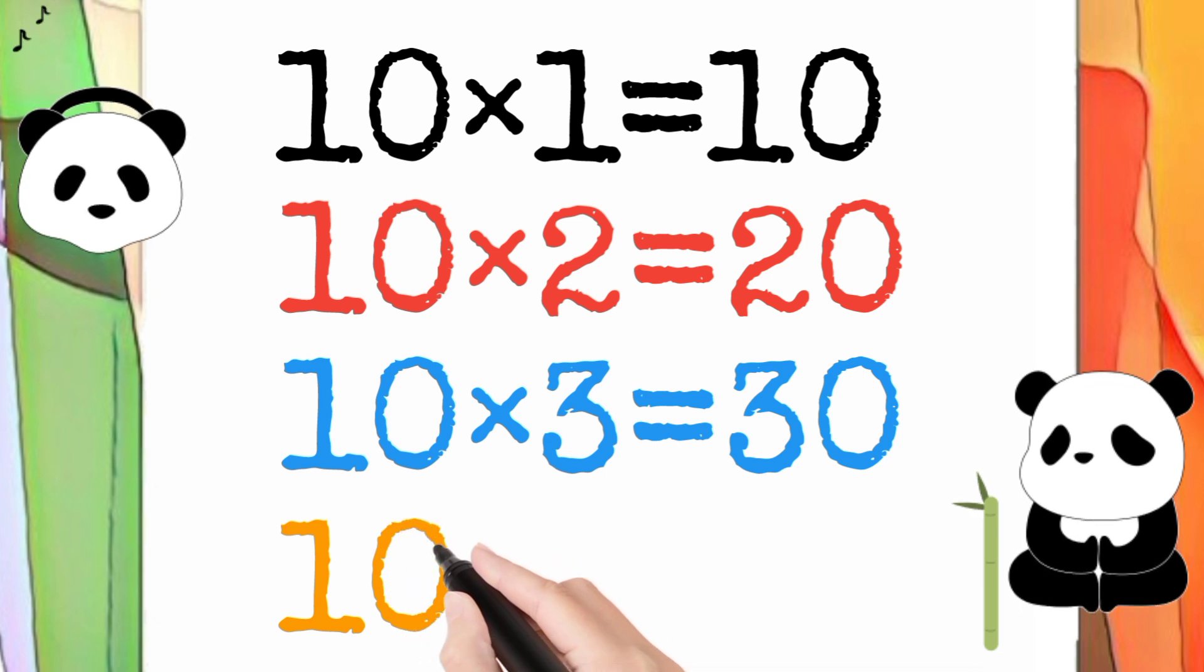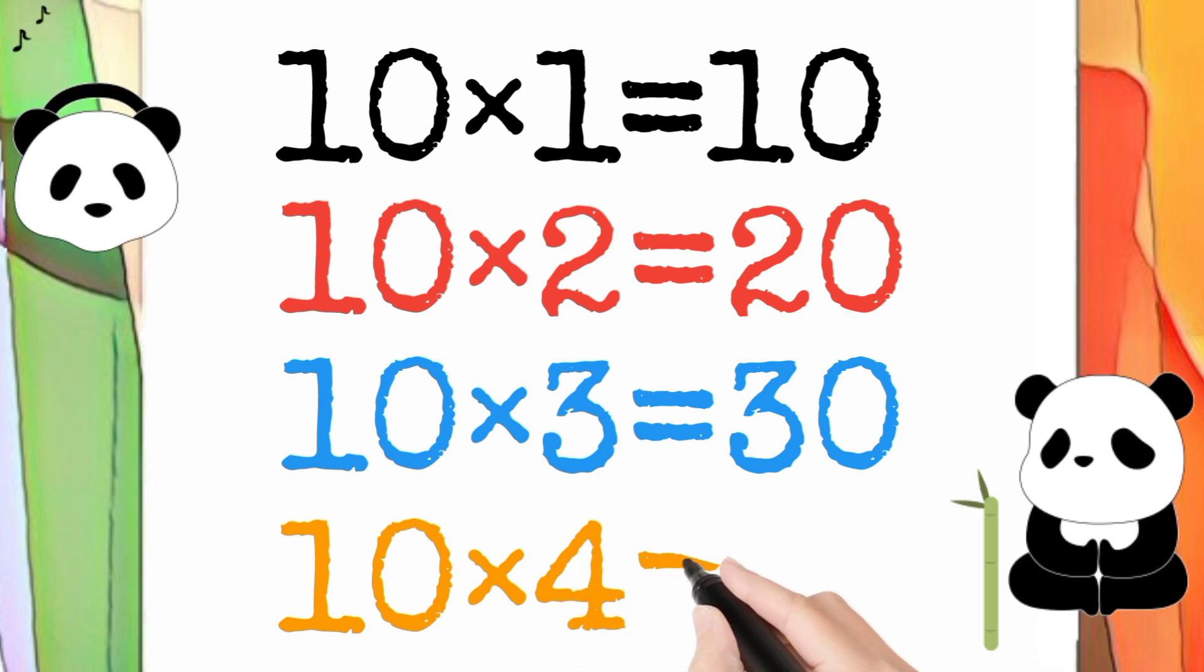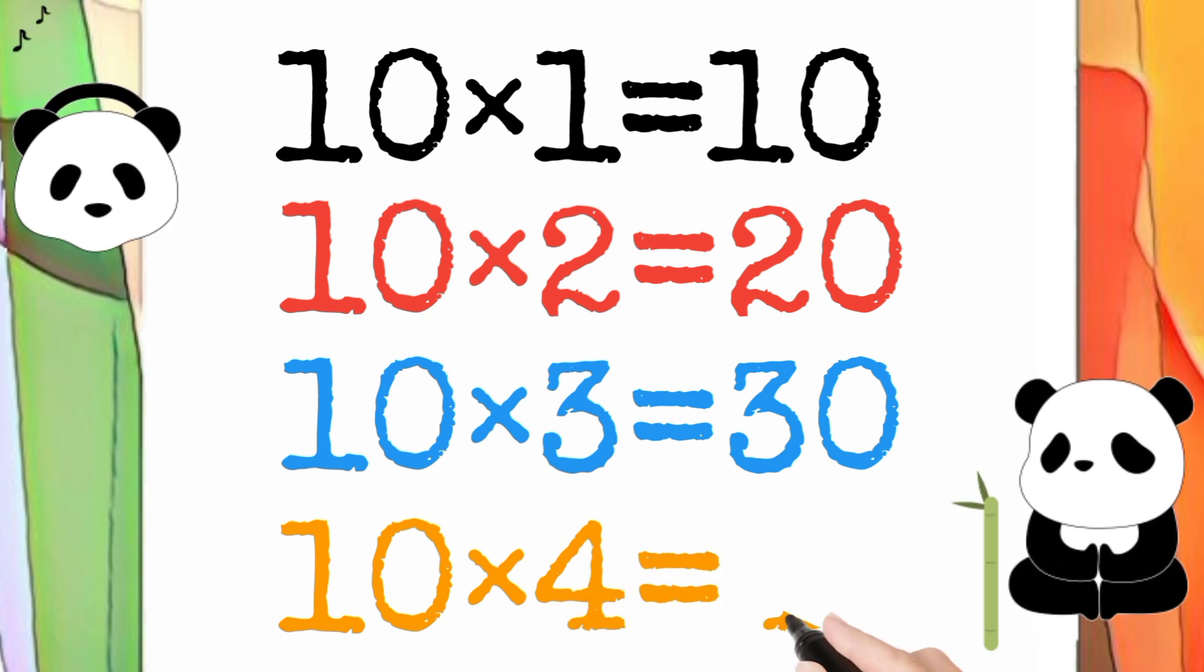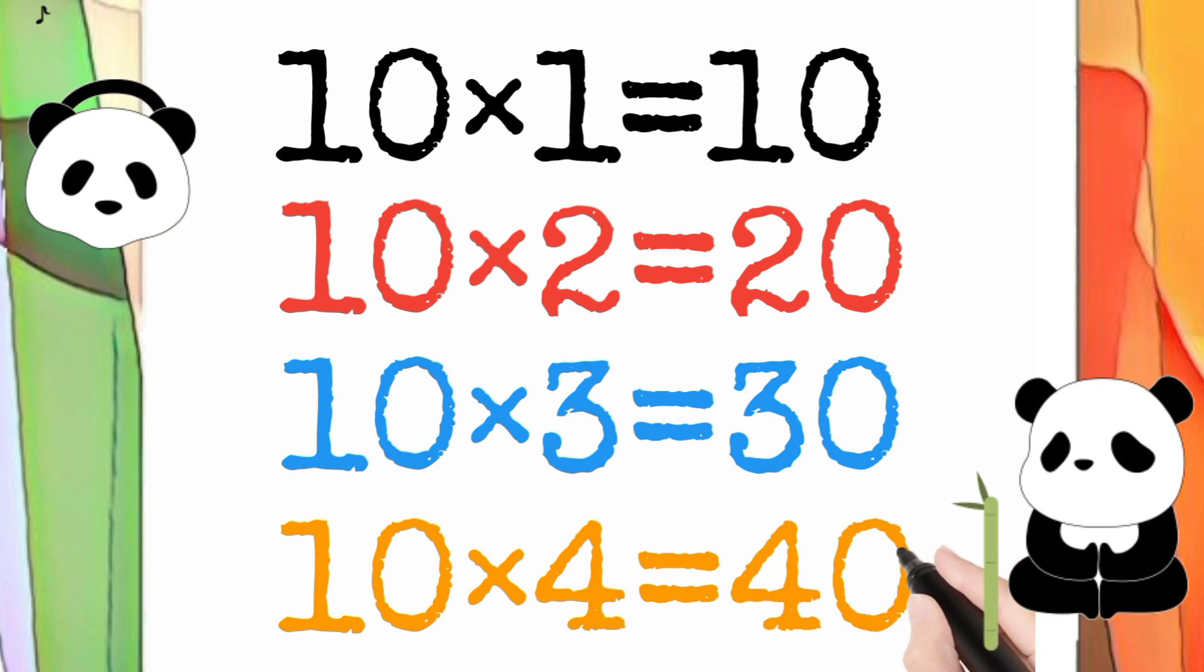10 multiply by 4 is equal to 40. So 10 times 4 equals 40.